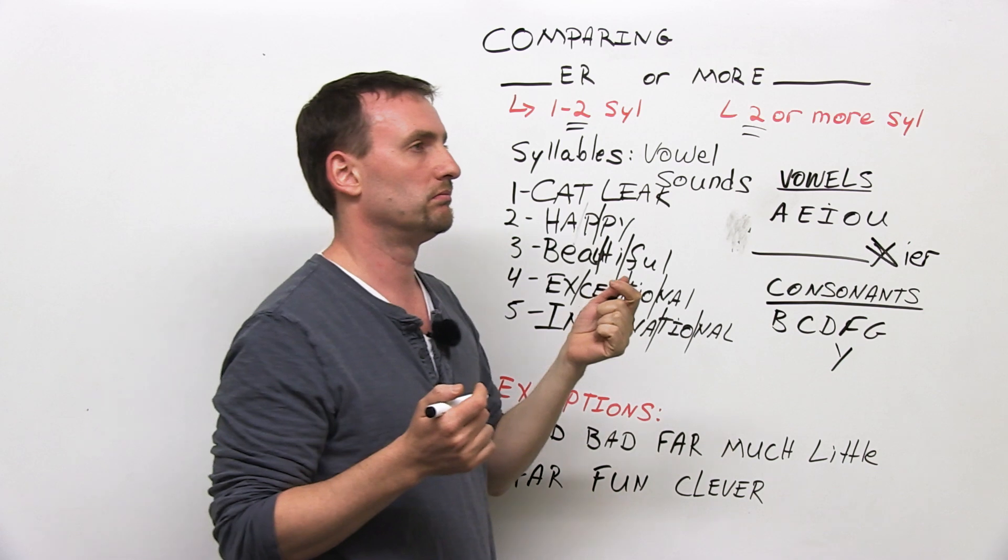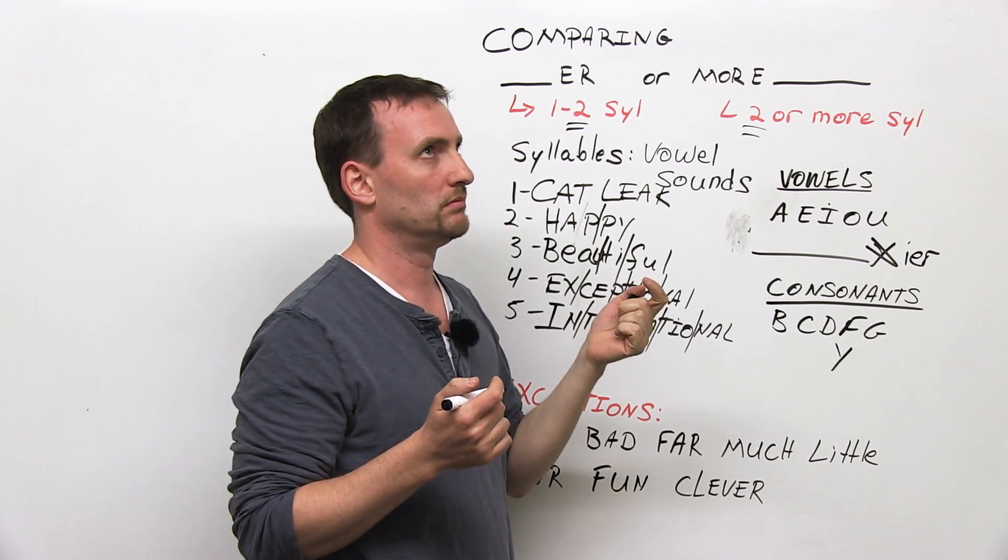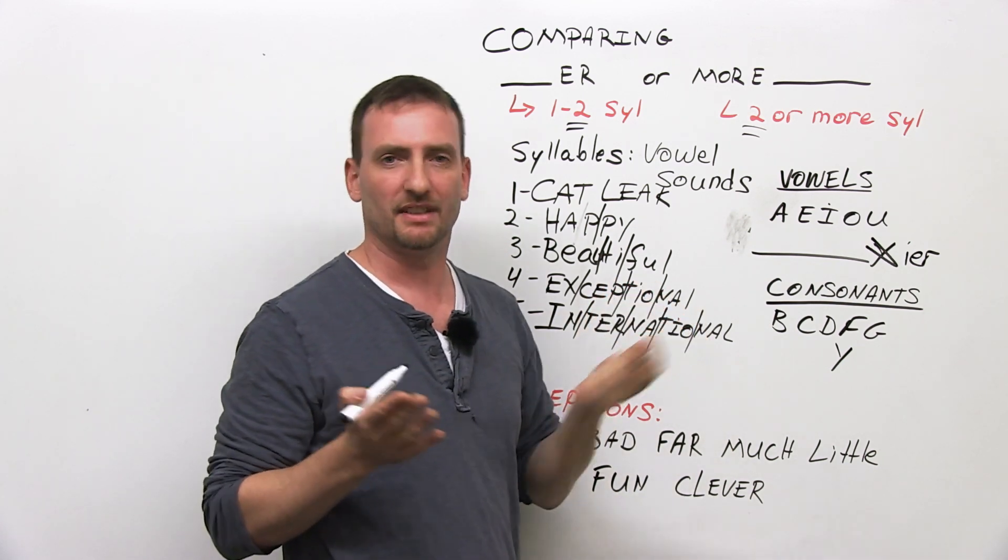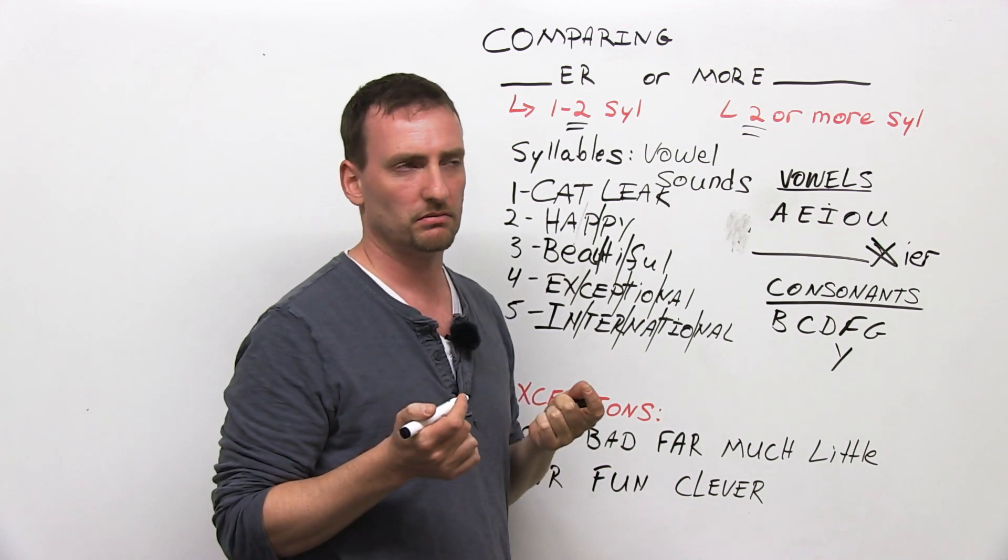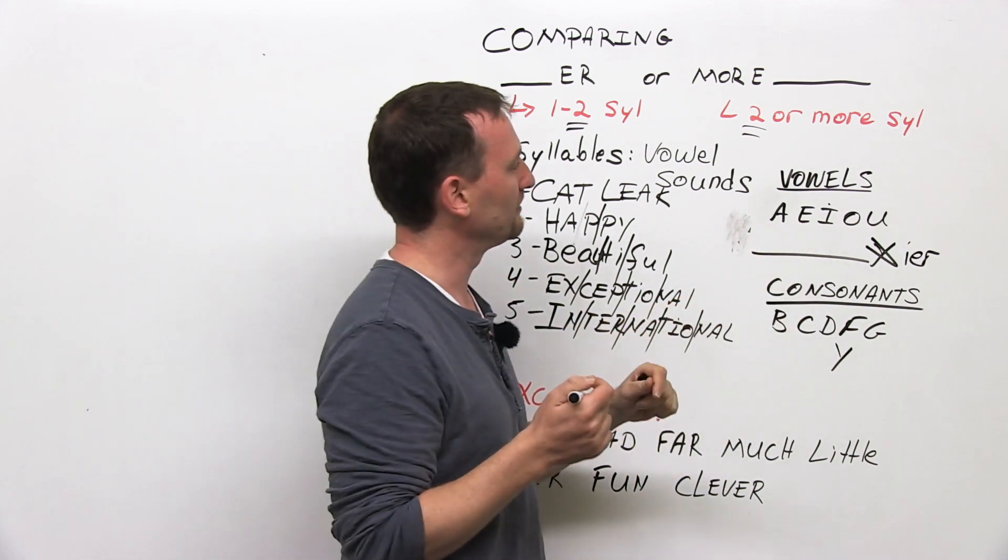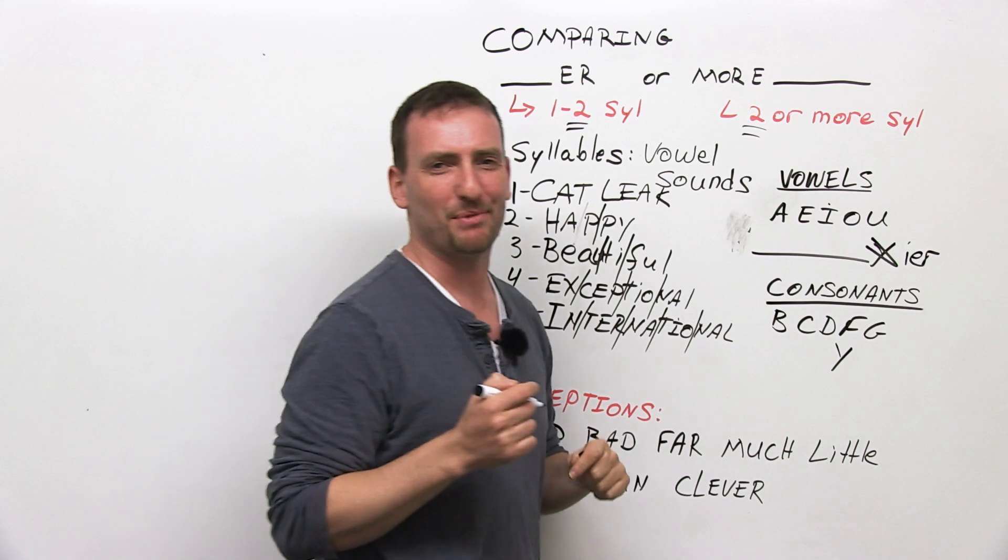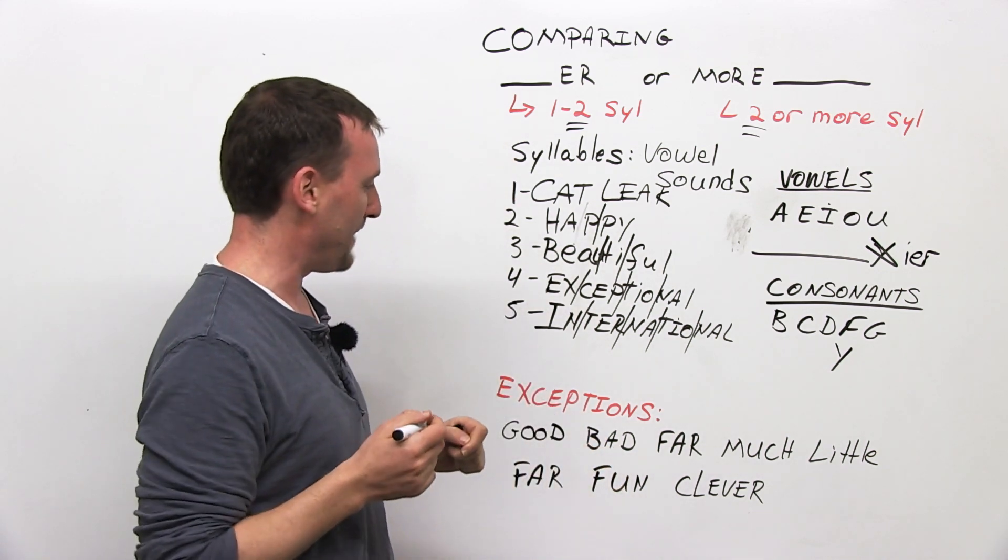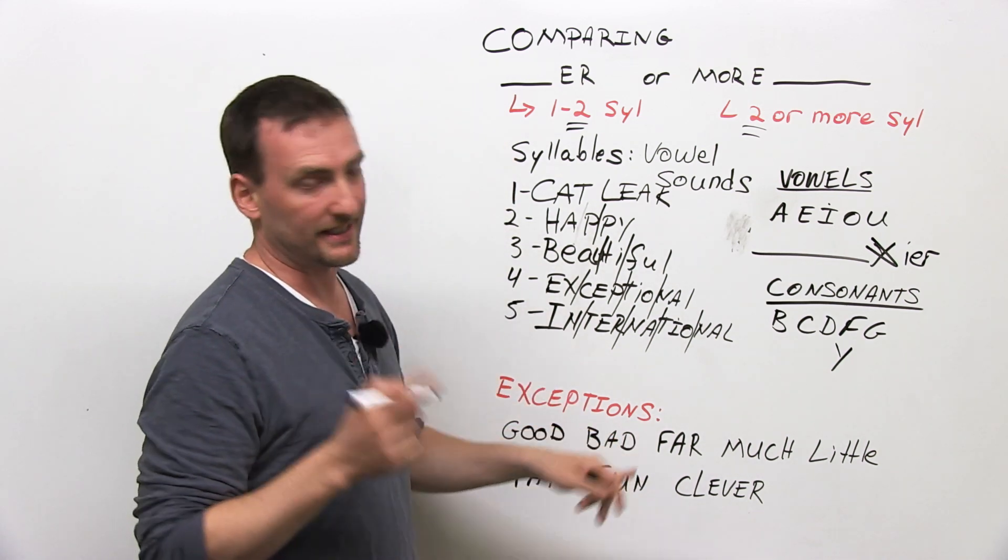So, gentle is technically a two-syllable word, but it ends in a vowel, so gentler. I'll think of an example of a consonant ending word. Now, there are, of course, exceptions.